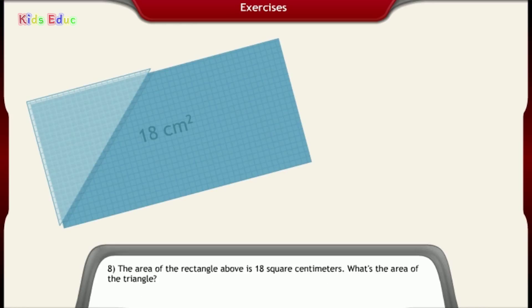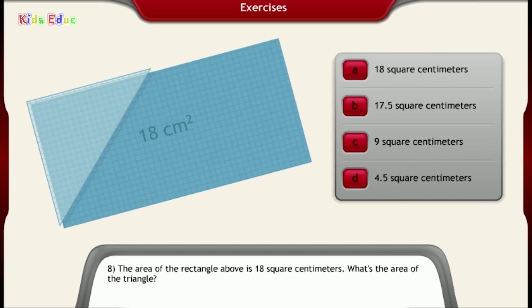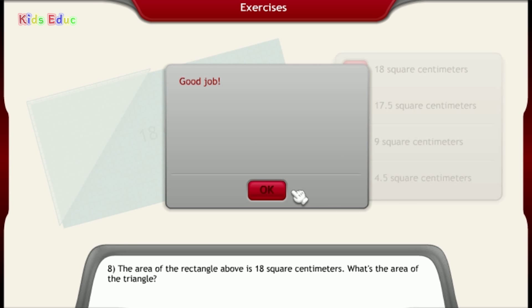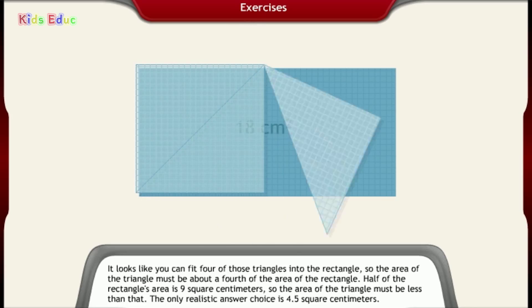Number 8, the area of the rectangle above is 18 square centimeters. What's the area of the triangle? 18 square centimeters, 17.5 square centimeters, 9 square centimeters, 4.5 square centimeters. 9 square centimeters. It looks like you can fit four of those triangles into the rectangle. So the area of the triangle must be about a fourth of the area of the rectangle. Half of the rectangle's area is 9 square centimeters. So the area of the triangle must be less than that. The only realistic answer choice is 4.5 square centimeters.